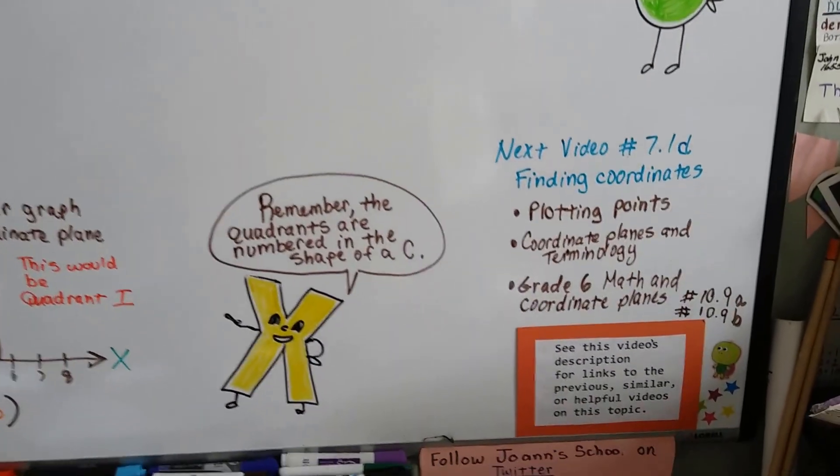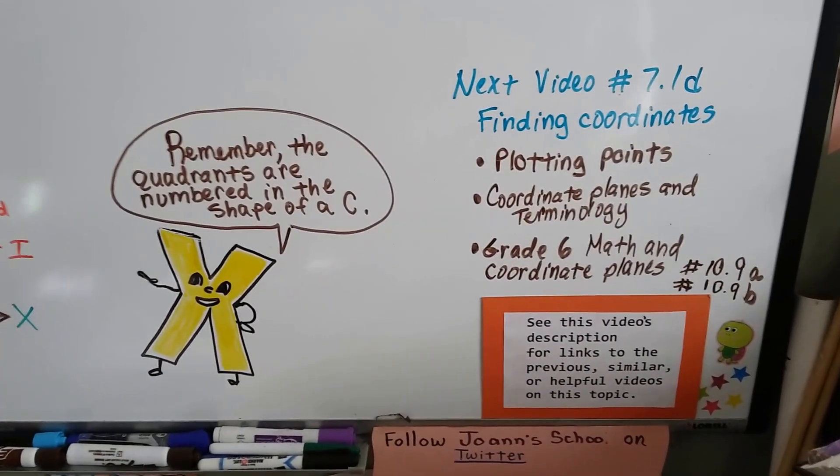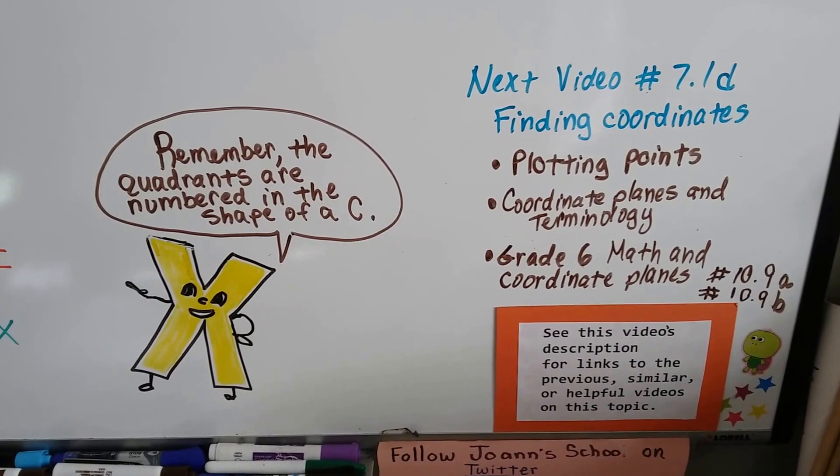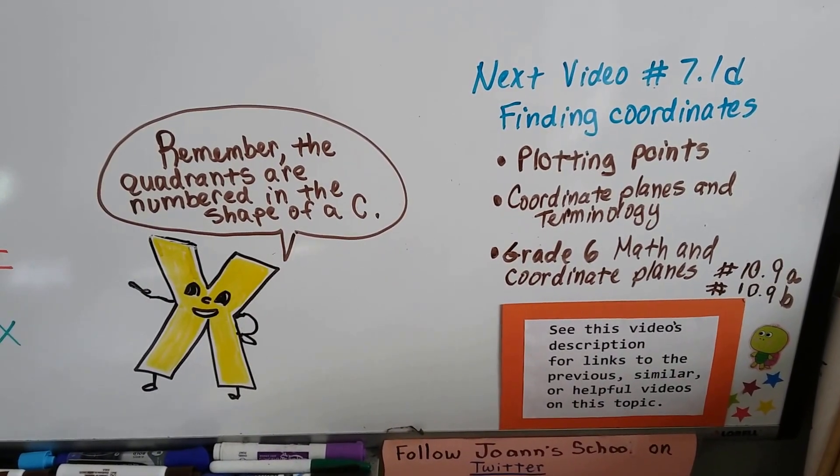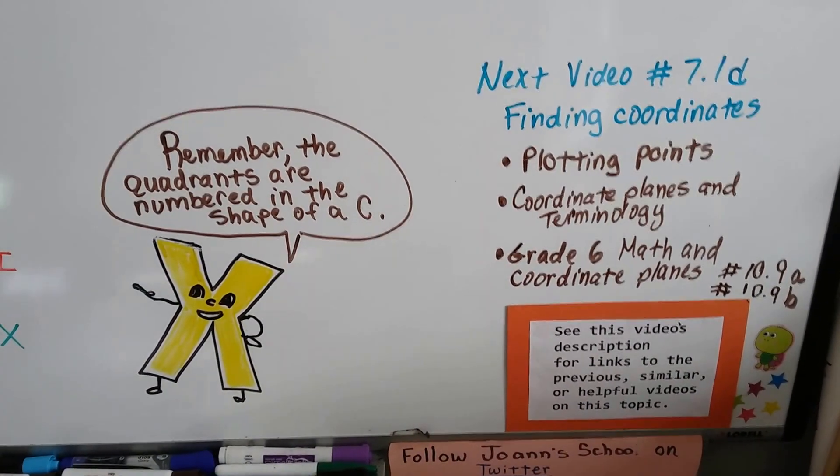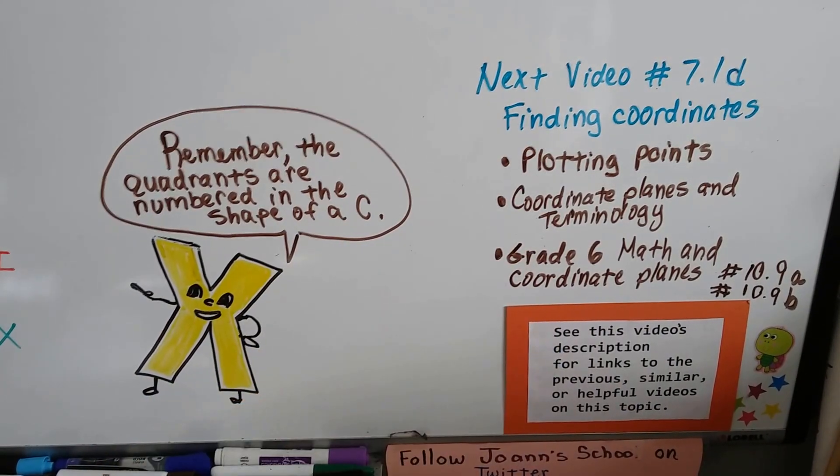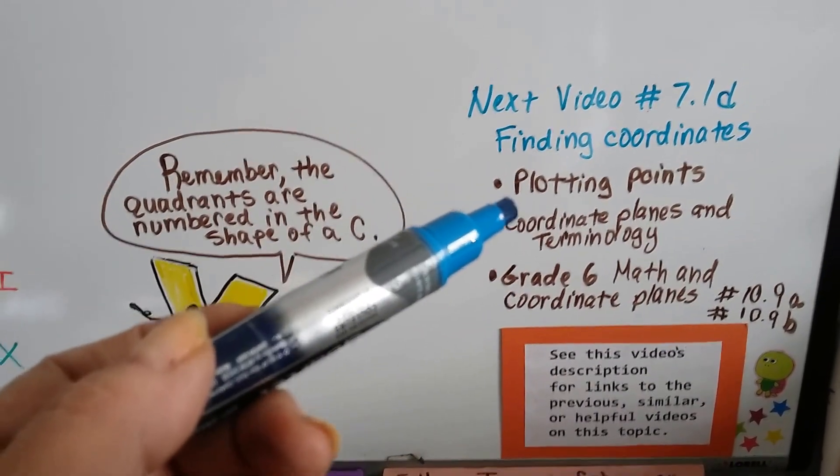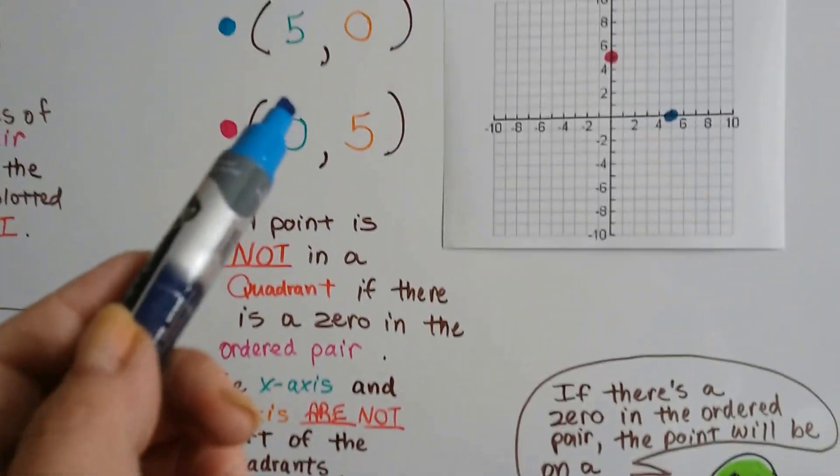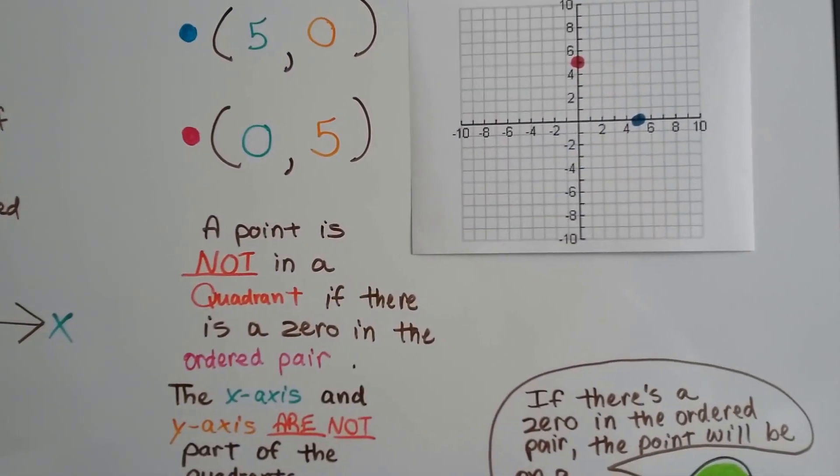Alright. So remember the quadrants are numbered in the shape of a c. In our next video, 7.1d, we're going to be actually finding coordinates. In the previous video, we plotted points, and there's going to be links to these videos in the description. And we plotted points that were given.